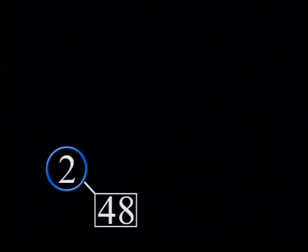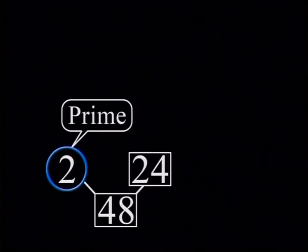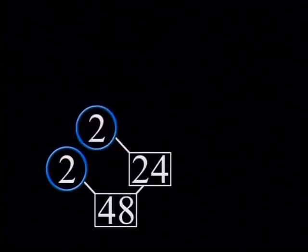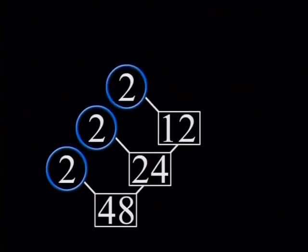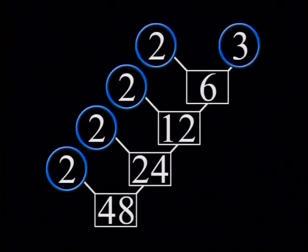We are going to put branches on the tree. We start with the lowest prime number, which is 2. Is 2 a factor of 48? Yes, 48 is equal to 2 times 24. So these are our first branches. We put the prime factor in a blue circle every time. Now, 2 is a factor of 24. 2 goes into 24, 12 times. 12 is 2 times 6. 6 has the factors 2 and 3. 3 is a prime factor, so we have finished our factor tree. We cannot go any further.